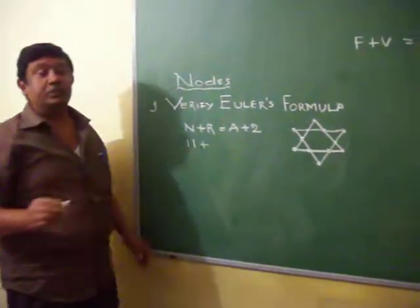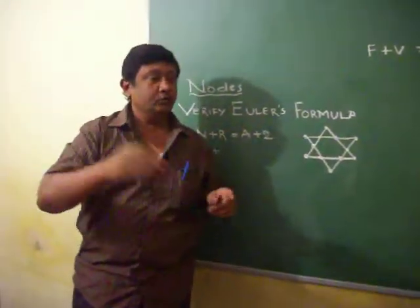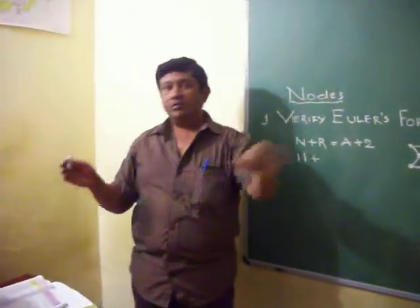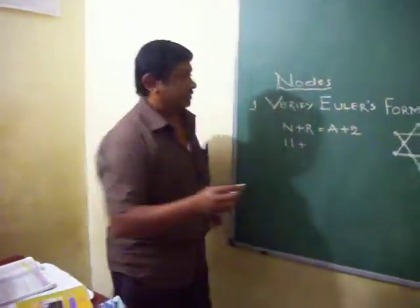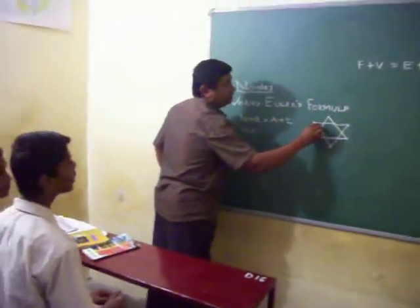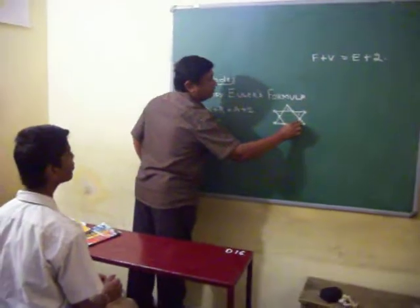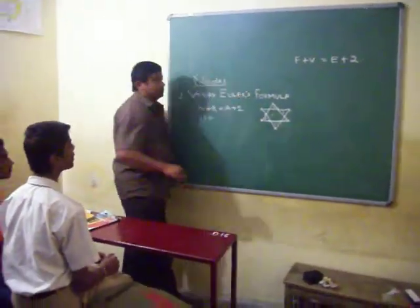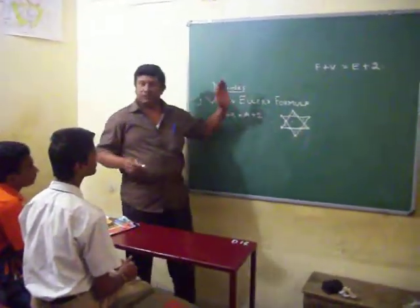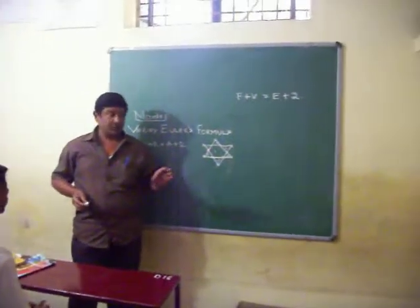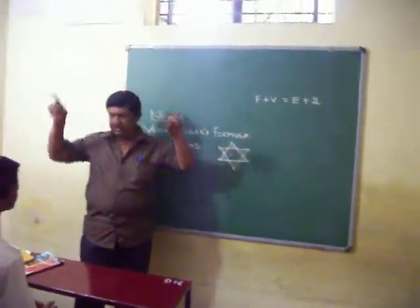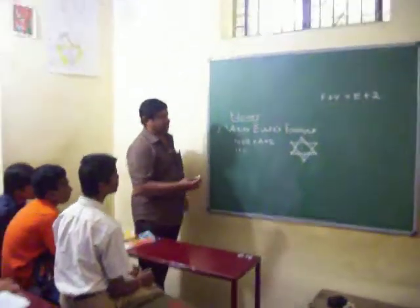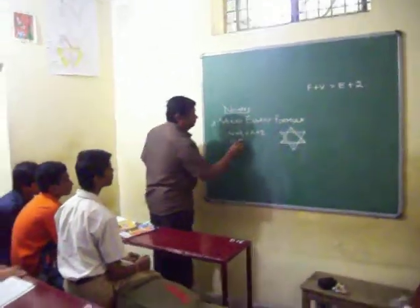Region means fully covered boundary. Counting the boundaries: 1, 2, 3, 4, 5, 6, 7, 8, 9, 10. So we should add one extra. Why? Because we are staying in a world — it is fully round. So add one extra to it, so it will become 11.